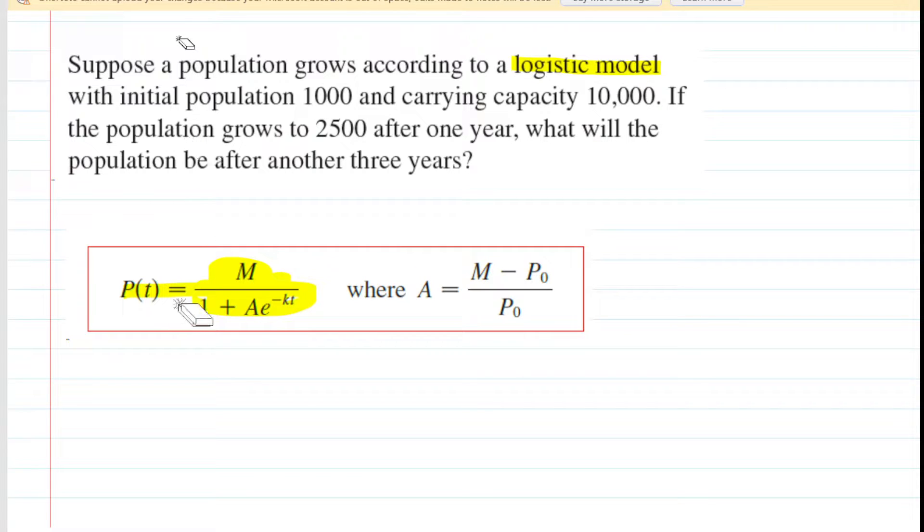And our first task in solving the question is to actually come up with the value of A, and we can very easily do that by applying the second equation associated with the logistic model. Now, just so that we have our symbols straight, when the question says that we have a carrying capacity of 10,000, then it is telling us that the value of M is equal to 10,000. So M is the carrying capacity.